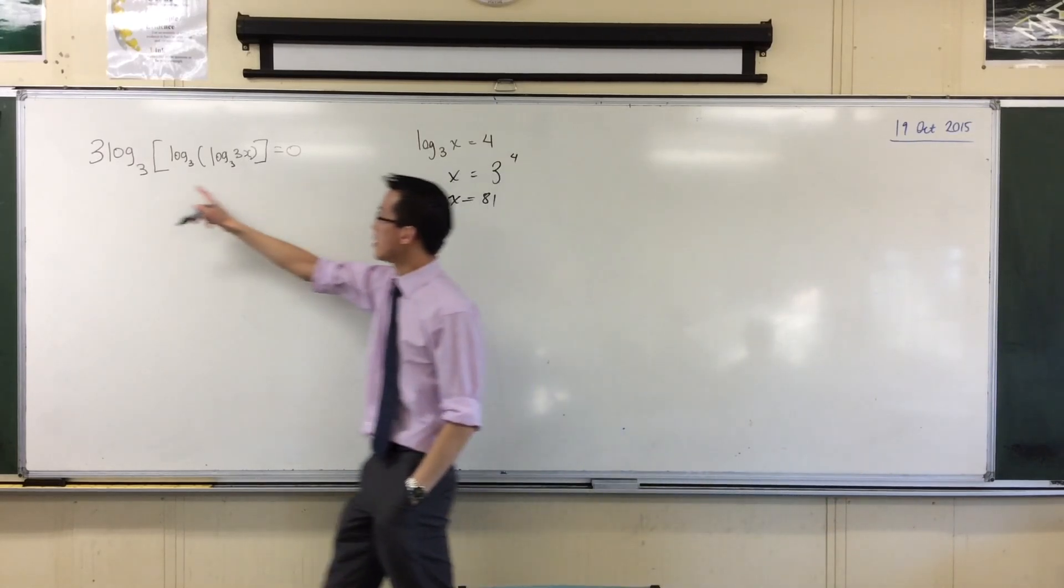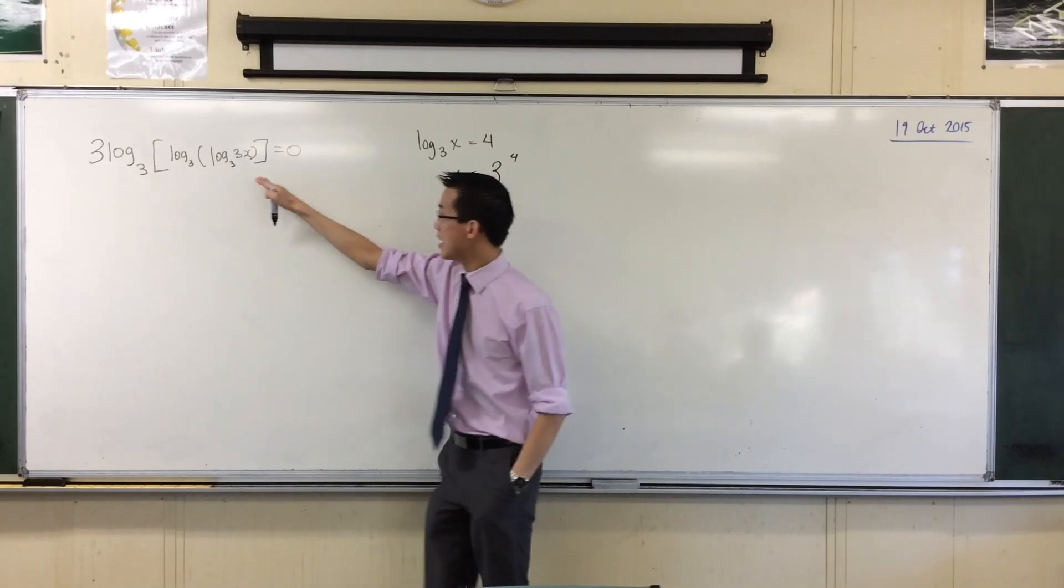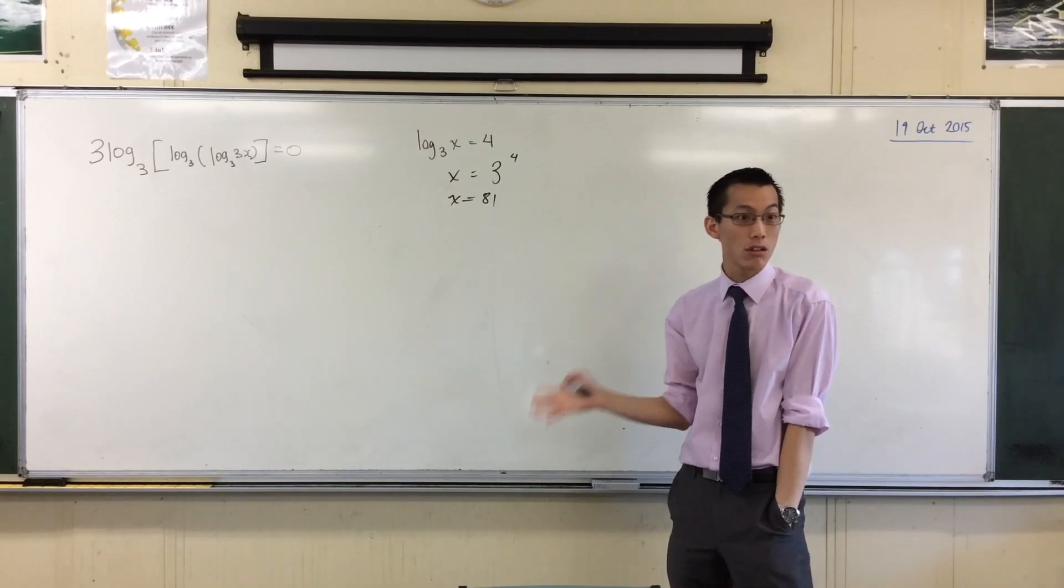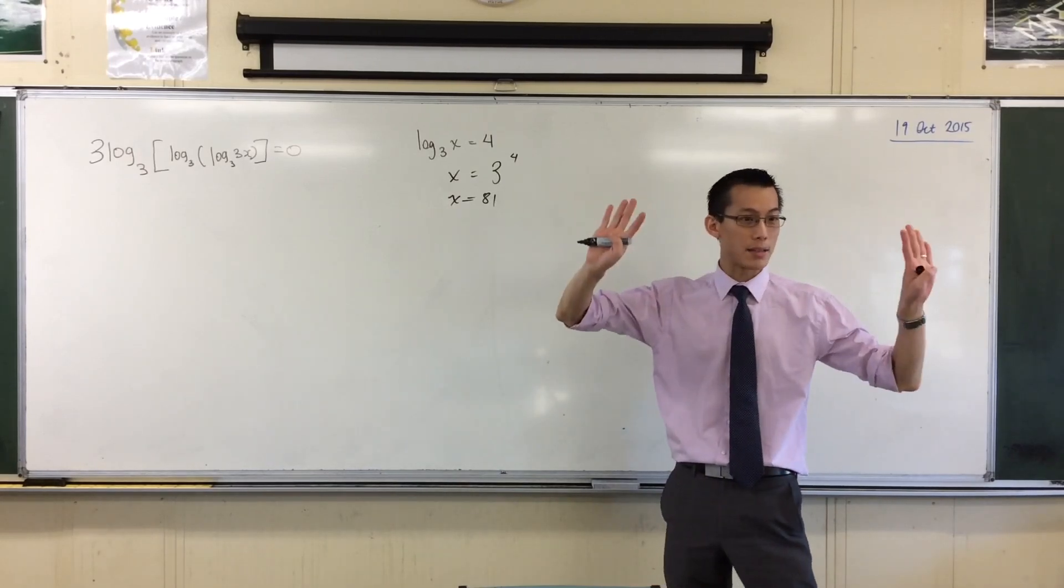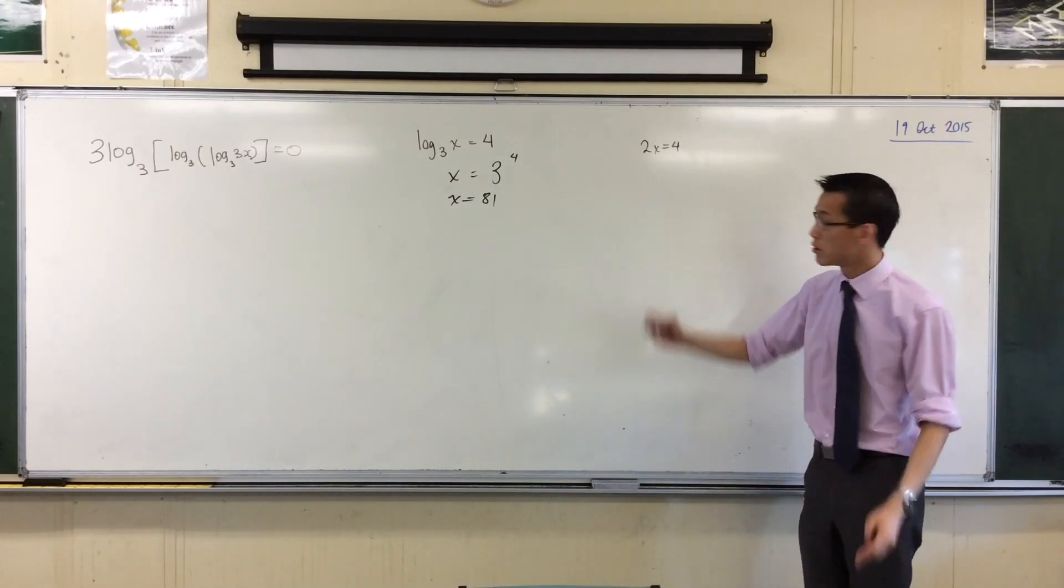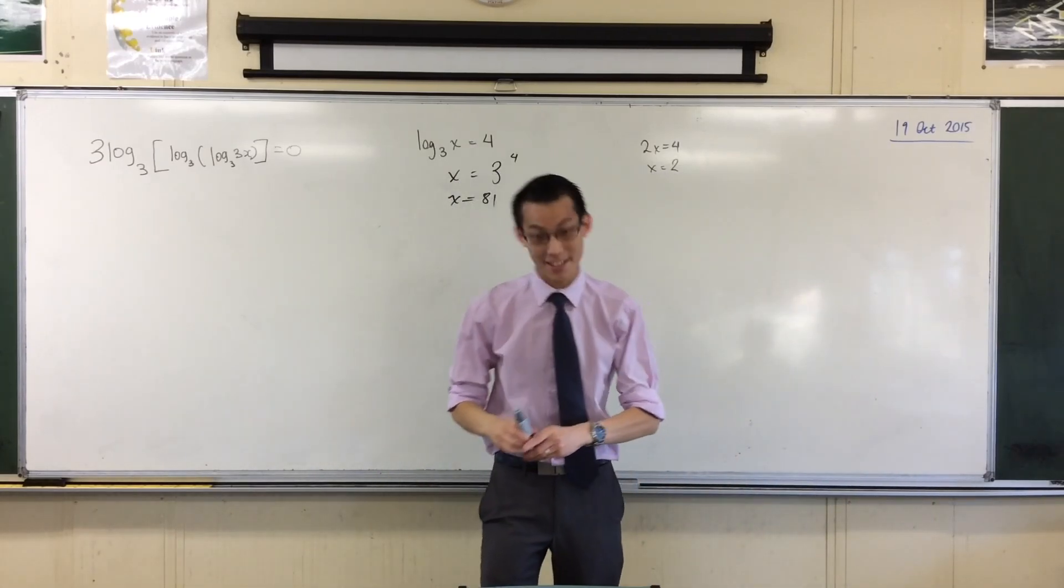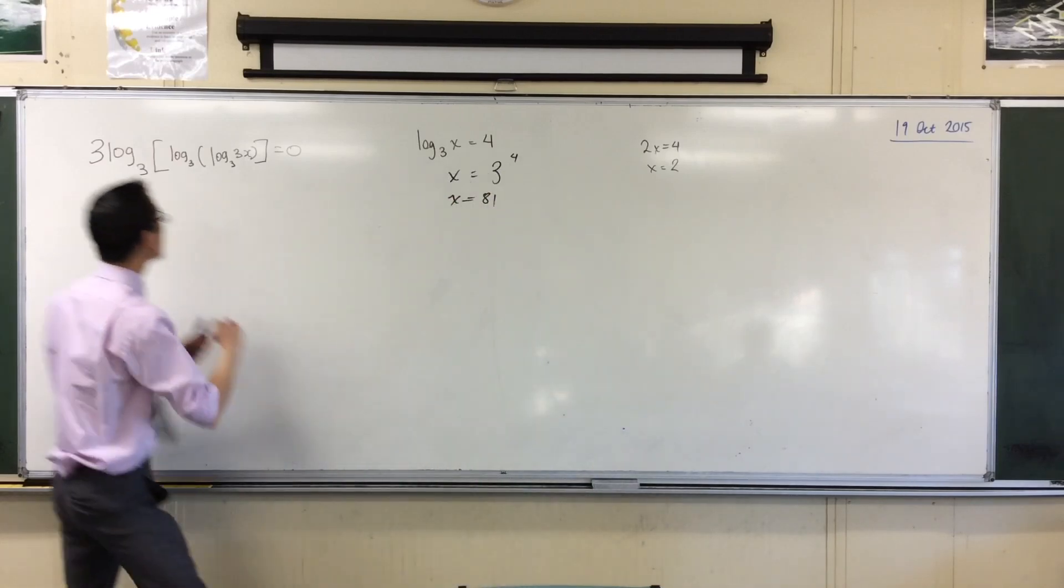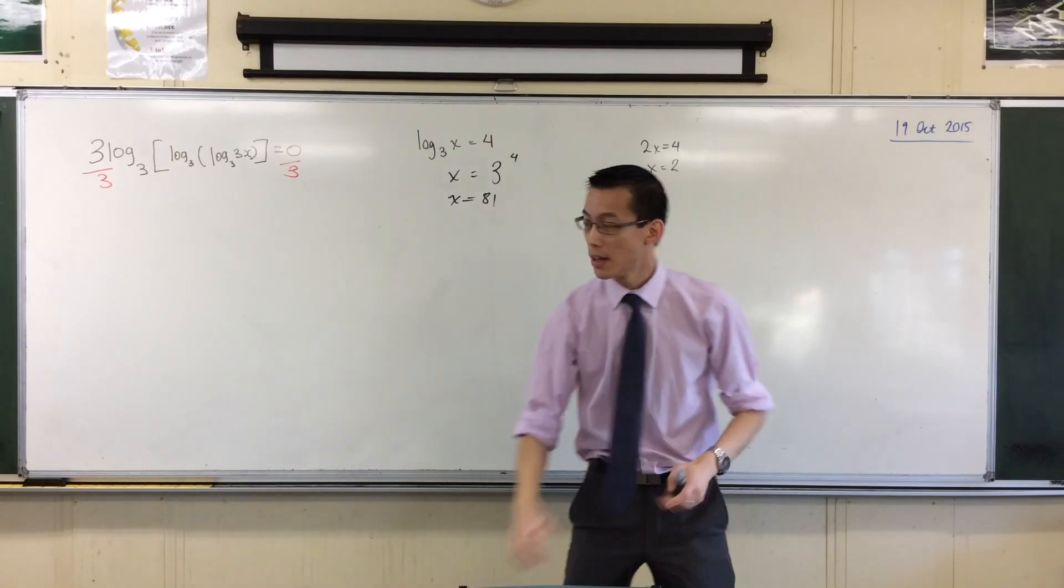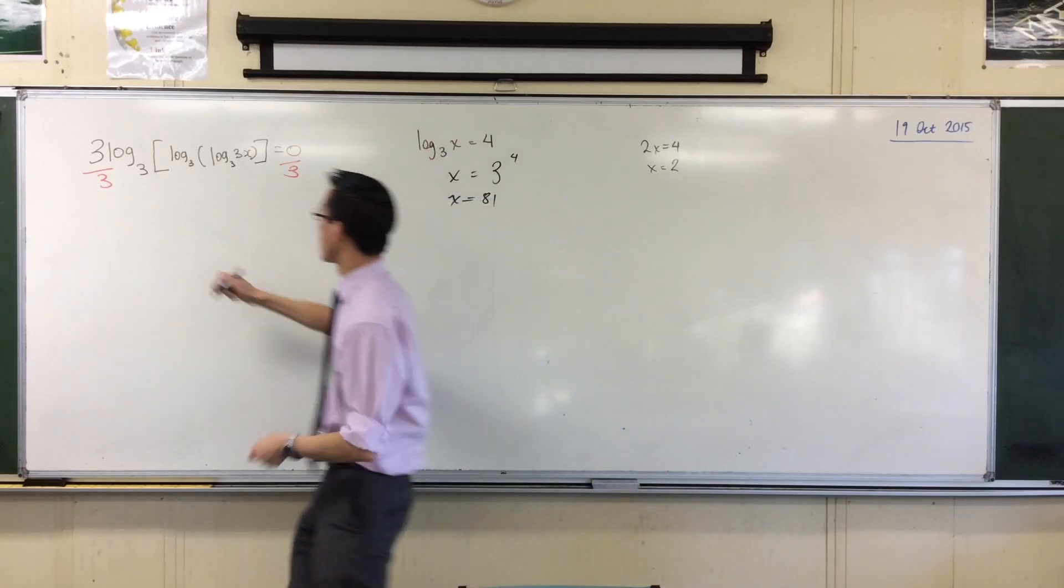Watch and see. For starters, you notice I've got 3 times some long awful mess. 3 times something is 0. This is an equation, so I can do to this equation anything I can do in normal equations. For instance, I can divide both sides by a number. That's something you can do with equations. So that 3 out the front, it's just trying to intimidate you. It doesn't add anything. I'm going to divide the left-hand side by 3, which means I divide the right-hand side by 3. So on the left-hand side, what happens to that 3 out the front? It just disappears.